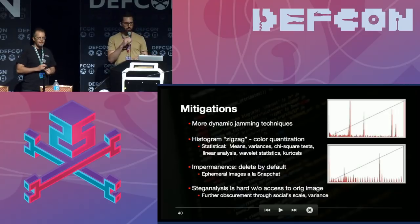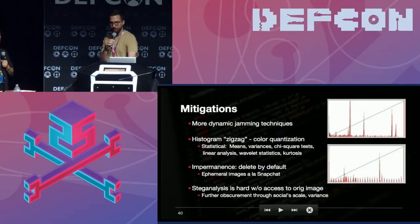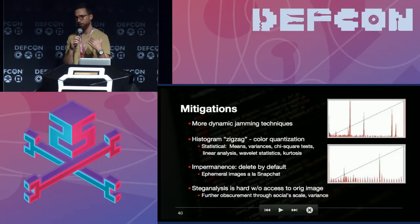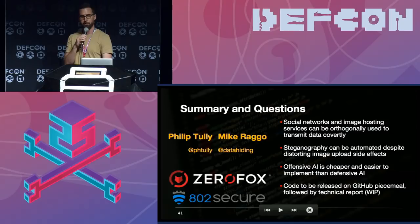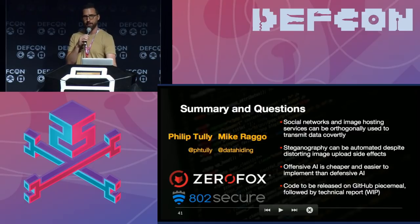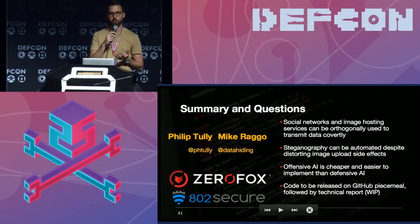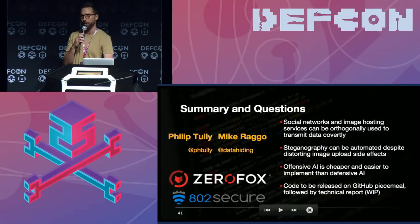In terms of mitigations, we're not presenting an undefeatable technique. There are things that can be done — you can imagine a more sophisticated and dynamic jamming technique: switch over the quantization tables more often and more frequently. There are also different ways to detect steganography that are well vetted out in the literature. I'm going to release some code in the next few weeks that will allow you to play with steganography on different social networks and automate it. And if anyone is interested in these techniques and this approach, just let me know — I would love to continue and collaborate on these ideas. Thanks.